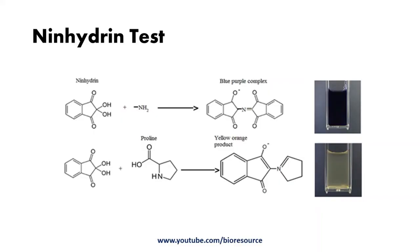Besides amino acids, other complex structures such as peptides, peptones, and proteins also react positively when treated with ninhydrin. Ammonium salts, amino sugars, and ammonia also give a positive ninhydrin test. To get reliable quantitative results, these interfering compounds should not be present in the reaction mixture.